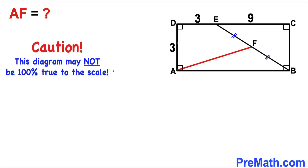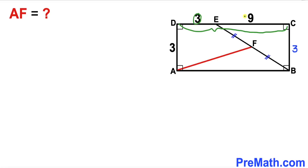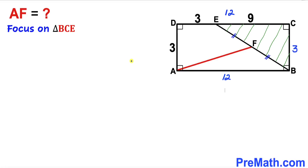Note that this figure may not be 100% true to scale. Let's get started. Focusing on this rectangle, this side length AD is 3 units, and since opposite sides are equal, BC is also 3 units. The whole side length CD is the sum of DE and EC, that is 3 plus 9, giving us 12. So side AB is 12 units as well.